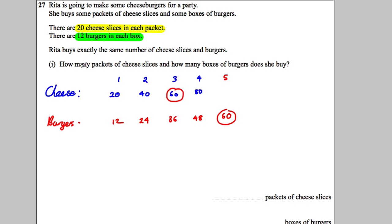Now the answer is not 60. It's asking how many packets of cheese slices. So one packet, two packets, three packets of cheese slices. And how many packets of burgers? One, two, three, four, five. So five boxes of burgers.